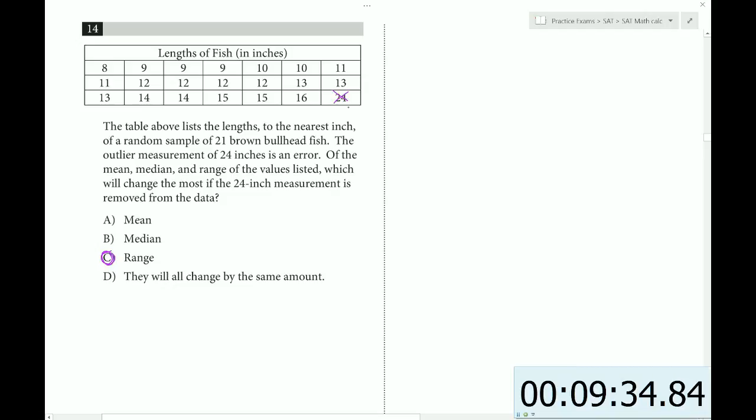To get the range, you have to subtract the largest and the smallest. So the range initially was 16. Now it's going to be 16 minus 8, which equals 8. So it changes very dramatically. The change is 8 units. That is a dramatic change.